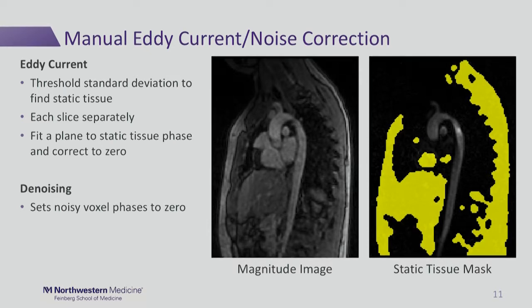We do something similar for denoising, except we're looking for voxels that have a very high standard deviation of the noise, and we can find a similar mask. This example here is a static tissue mask, but we get a similar one for the noise.